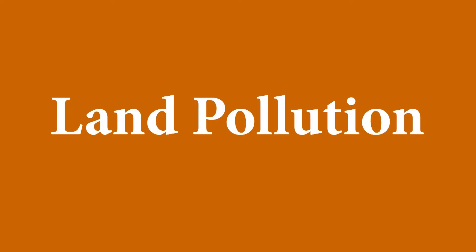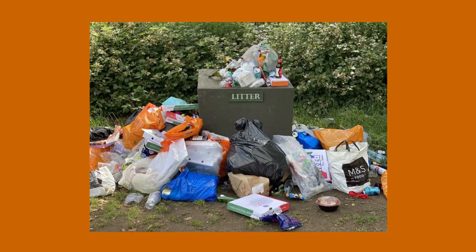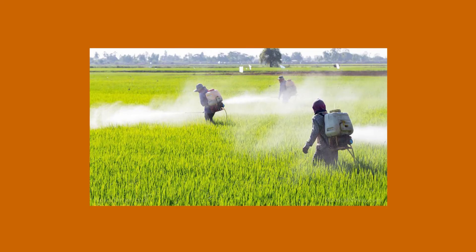Land pollution. Land gets polluted due to various human actions. Some of them are: throwing garbage in the open, throwing household waste and polythene bags in the open, overuse of chemical fertilizers by farmers, and dumping of waste by factories.